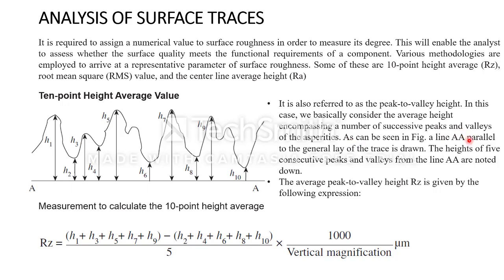As can be seen in the figure, line A parallel to the general lay of the trace is drawn. The average peak to valley value is given by the following expression: we take the addition of all the peaks H1, H3, H5, H7, and H9, and subtract the valleys H2, H4, H6, H8, and H10. Totally we take 5 values for peaks and 5 for valleys, divide by 5, then multiply by 1000 divided by the vertical magnification. This gives the value of Rz.